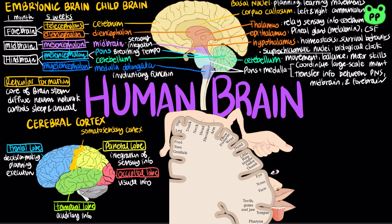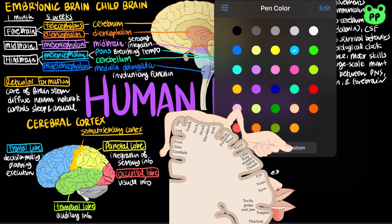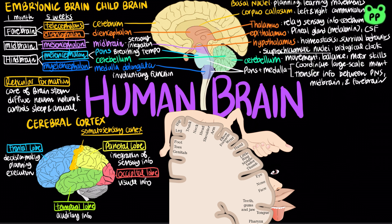The parietal lobe then integrates the sensory information and sends it to the frontal lobe, which helps plan actions and movement. The cerebral cortex may then generate motor commands that cause particular behaviors. These commands consist of action potentials produced by neurons in the motor cortex, which lies at the rear of the frontal lobe.